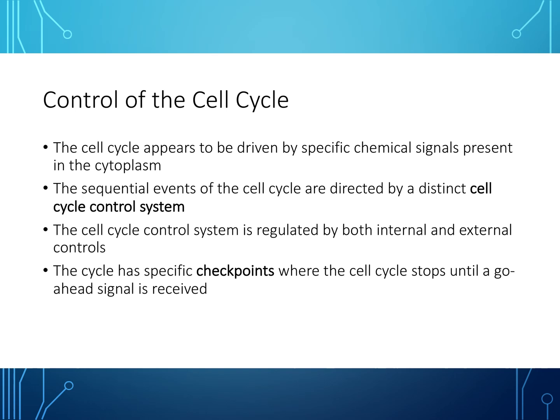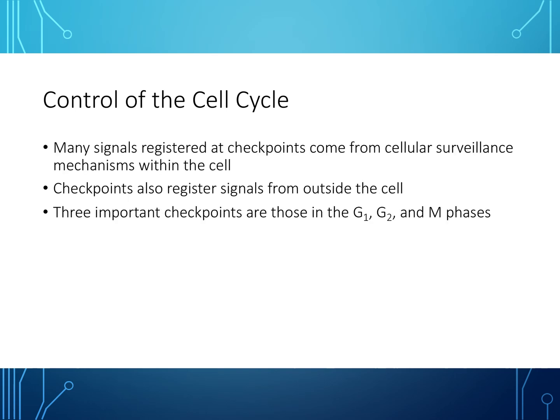The cell cycle appears to be driven by specific chemical signals present in the cytoplasm. The sequential events of the cell cycle are directed by a distinct cell cycle control system, regulated by both internal and external controls. There are specific checkpoints where the cell cycle stops until a go-ahead signal is received. Many signals at checkpoints come from cellular surveillance mechanisms within the cell, and these checkpoints also register signals from outside the cell.